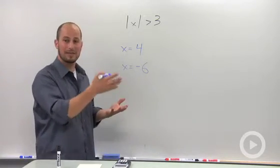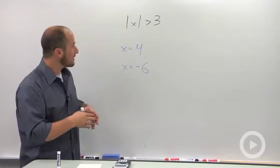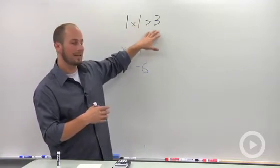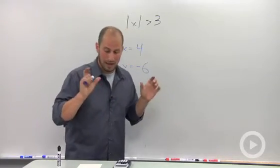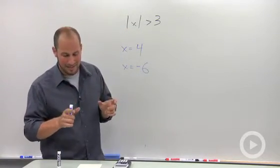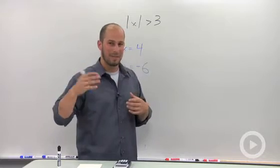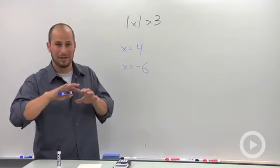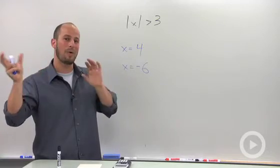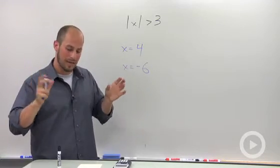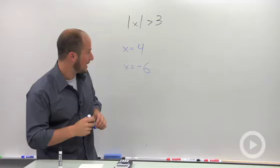When we're dealing with an absolute value that is greater than something, we're actually going to end up with two different regions. What I always remember for this is absolute value is greater, there's a little thing I like to remember which is 'great door, great door' or as in a union, it's one or the other. So what we actually make up for this is two different statements.